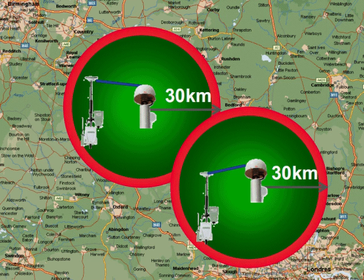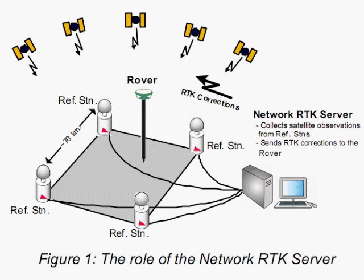People buy RTK systems for the accuracy, so when you lose accuracy, it kind of negates the purpose of buying an RTK system. The industry has come up with a method to link multiple base stations together, known as a real-time network. Transporting the correction data over the internet has really allowed this technology to grow. In this scenario, multiple base stations send their data to a central processing facility, which allows the system to create a map of atmospheric conditions. There are a lot of complex algorithms involved in this, but it allows for more accurate correction info at larger distances from the base station, and even allows the base stations to be spread further apart.